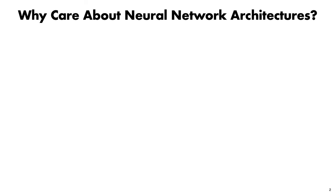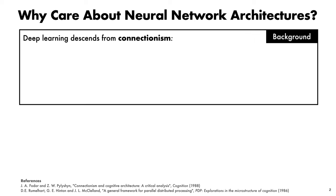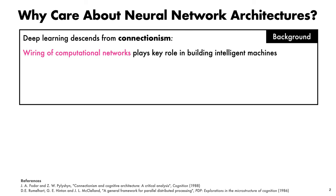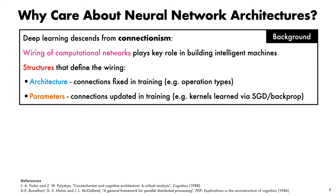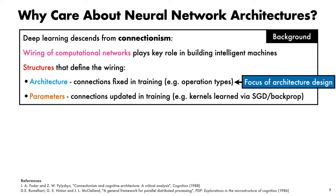Let's first talk about why we care about neural network architectures. Modern deep learning stems from connectionism, where it has long been believed that focusing on the wiring of the network is the way to go for building intelligent machines. It's helpful to categorize the kinds of wiring that occur between neural network units into two categories: the network architecture — loosely speaking, the connections between units that are typically fixed throughout training, such as whether two units are connected by convolution or max pooling — and network parameters, the connections between units that are updated during training, such as the convolutional kernel weights, which are typically learned via SGD and backpropagation.